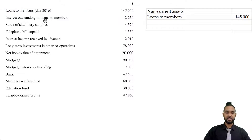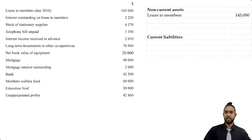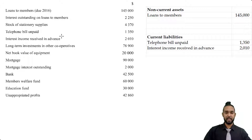Next, interest outstanding on loans to members — that's accrued revenue, so that's a current asset. Stock of stationery supplies is also a current asset. Telephone bill unpaid is a current liability, so we can start populating that list too. Let's put telephone bill unpaid at the top of our current liabilities list. Going back to the other items, interest income received in advance — prepaid revenue — is also a current liability, so we add that to the list.